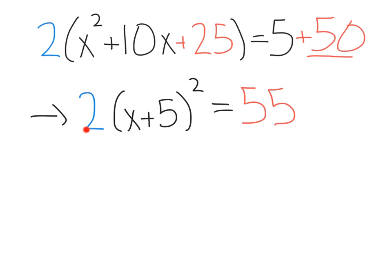From there, we still have our 2 times x plus 5 times x plus 5. If we factor that, that's x plus 5 squared equals the 5 plus 50 is 55.